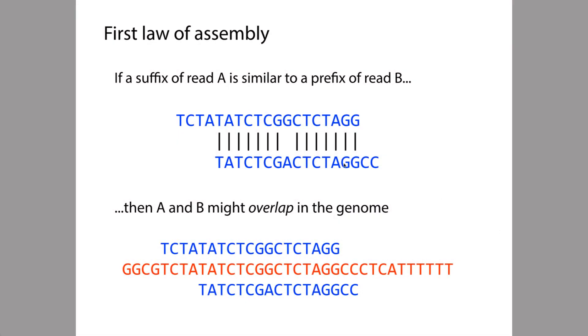In this example here, the two reads overlapped, but they didn't have a perfect match. There was one mismatch in the middle here. It was almost perfect except for that one mismatch. So why might there be differences like this? Why do we have to allow there to be differences between these reads when we look for overlaps?